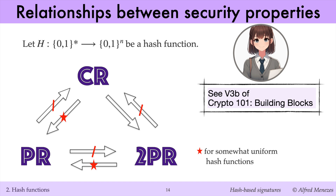From these relationships, we see that collision resistance is the strongest of the three properties. A collision resistant hash function is necessarily both preimage resistant and second preimage resistant, but the converse isn't true. You can find proofs of these results in video V3B of our Cryptography 101 Building Blocks course.